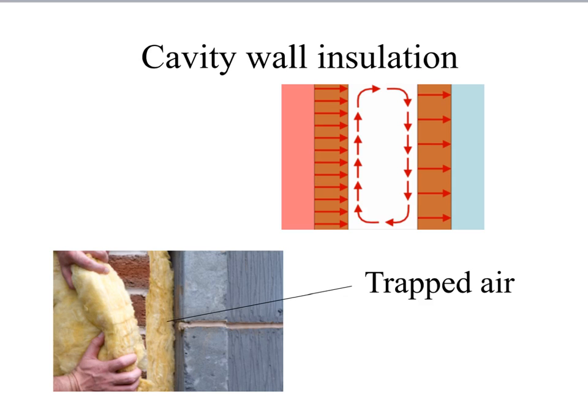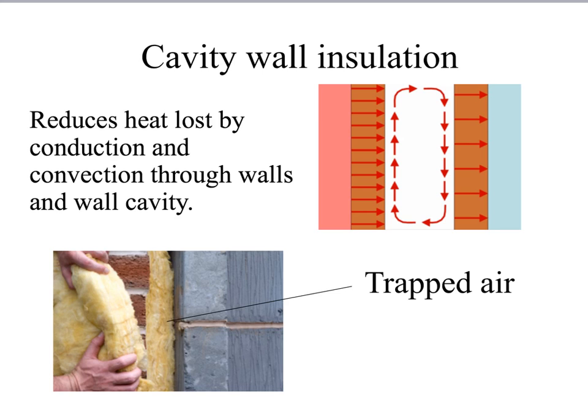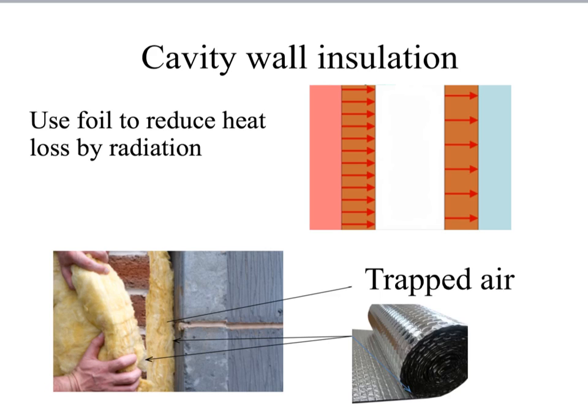So, to overcome this, we can put a layer of cavity wall insulation between those two layers of brick. That can be fiberglass, as shown here, or it could be foam that's injected into the cavity. Inside that insulation, of course, is our trapped air. Once the air inside the cavity is trapped, it can no longer move, so it prevents the convection current from being set up. And as we know, trapped air is also a poor conductor, so heat energy can't be lost via conduction through the cavity. There would still be some heat loss, and another way of reducing this is to use foil inside the cavity. By putting a layer of foil either side of the insulation, you can also reduce the heat loss by radiation.